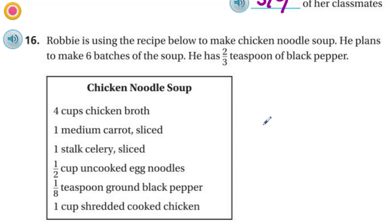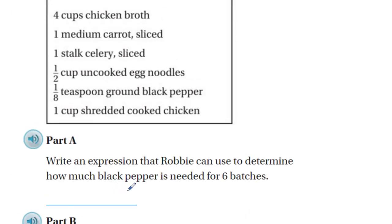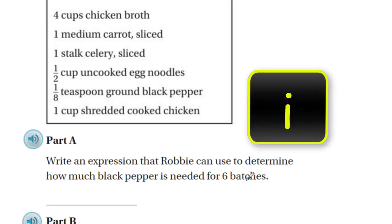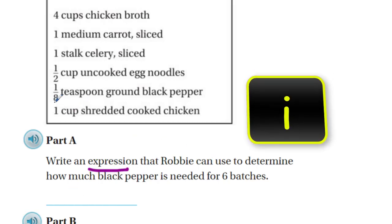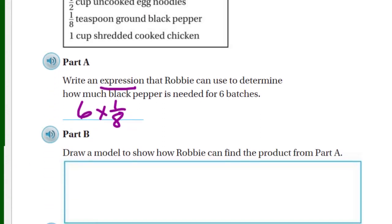Robbie is using a recipe to make chicken noodle soup and plans to make six batches. He has two-thirds teaspoon of black pepper. Part a says: write an expression that Robbie can use to determine how much black pepper is needed for six batches. The recipe calls for one-eighth teaspoon per batch, so the expression is simply six times one-eighth. We're not asked to solve it — just write the expression.